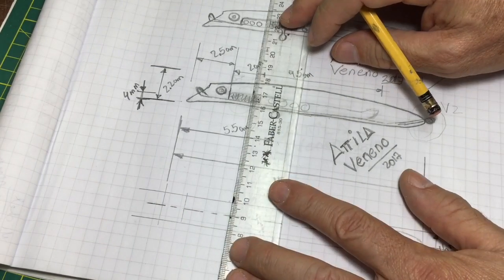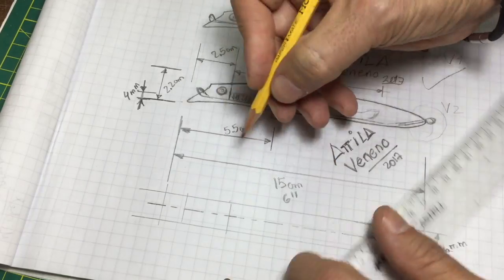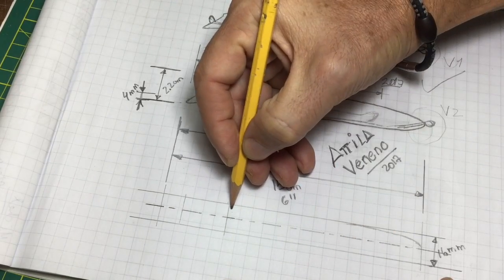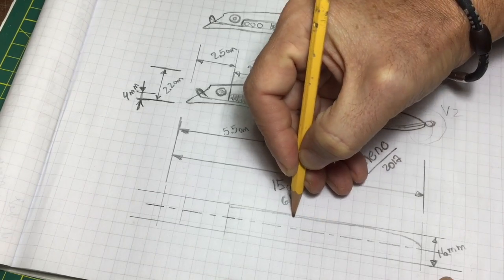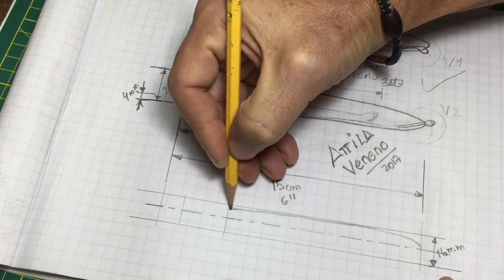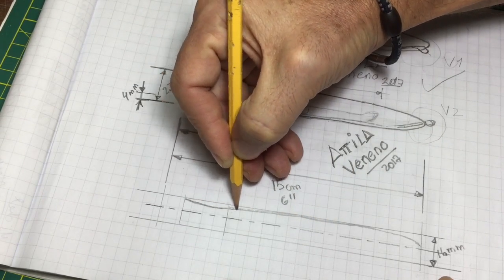These reference lines are key, because based on them, I will draw the head and the lip, if I can call it the lip.